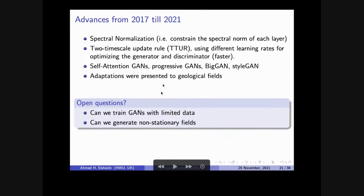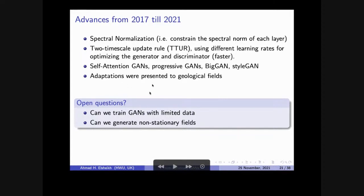A lot of improvement has happened. Training GANs is way easier now than early on, though it still consumes a lot of computational power. Adaptations appeared — people were generating artificial or semi-real data for geological models and trying to publish these applications.